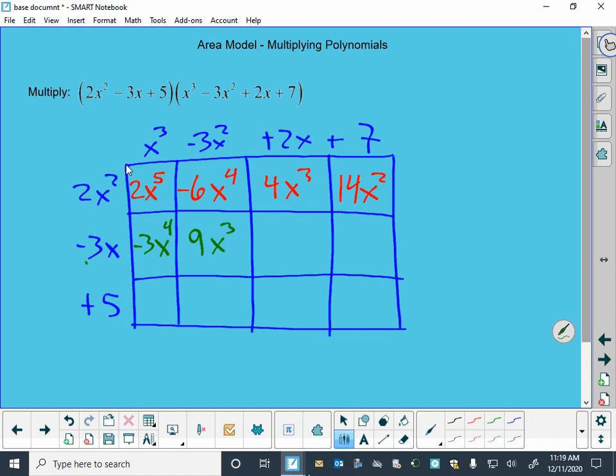Negative three times positive two is negative six. x times x is x². Negative three times seven is negative 21, and we got an x over there.